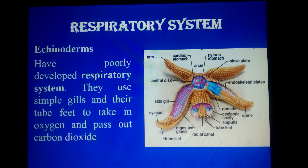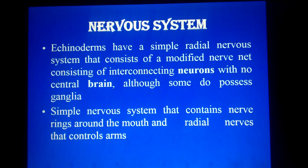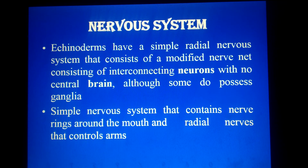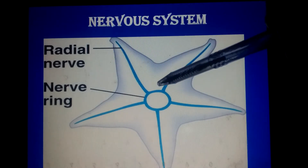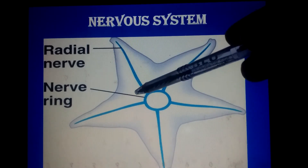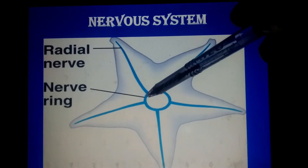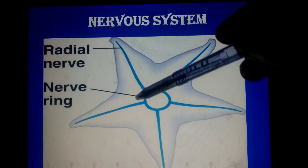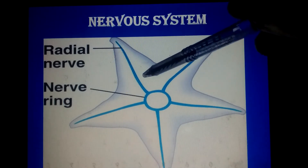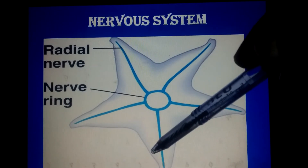The nervous system is a simple radial nervous system. They don't have any brain, but some species do possess ganglia. The nervous system consists of a nerve ring present around and along the mouth on the ventral surface. From these nerve rings, radial nerves arise and reach to each arm and each part of the body.